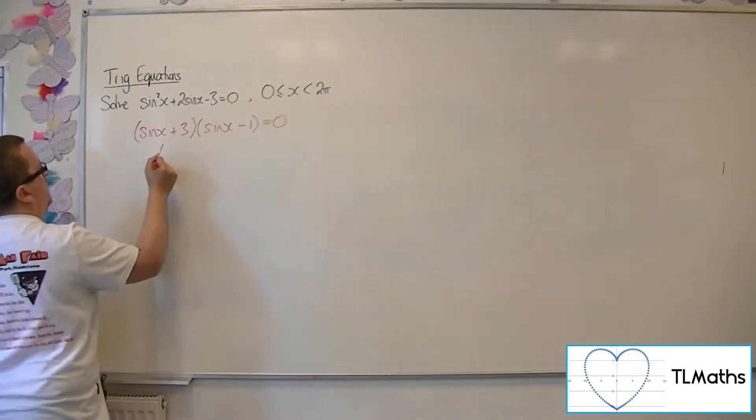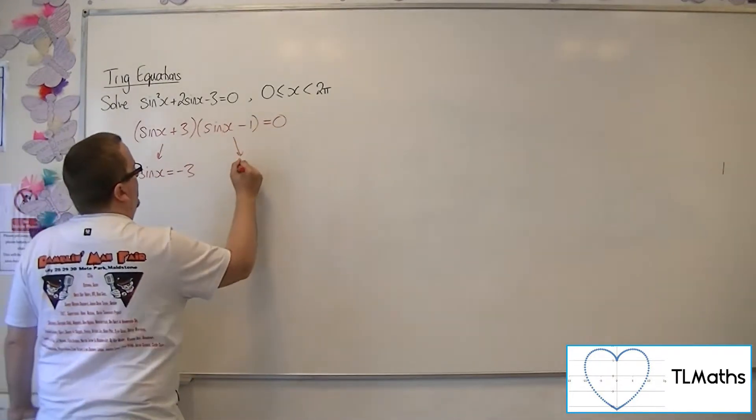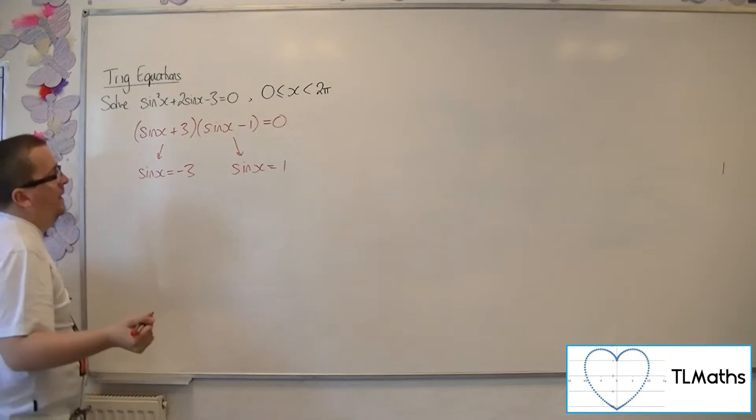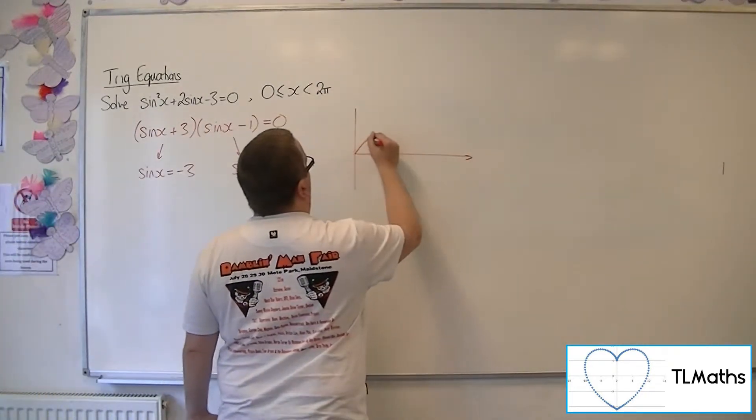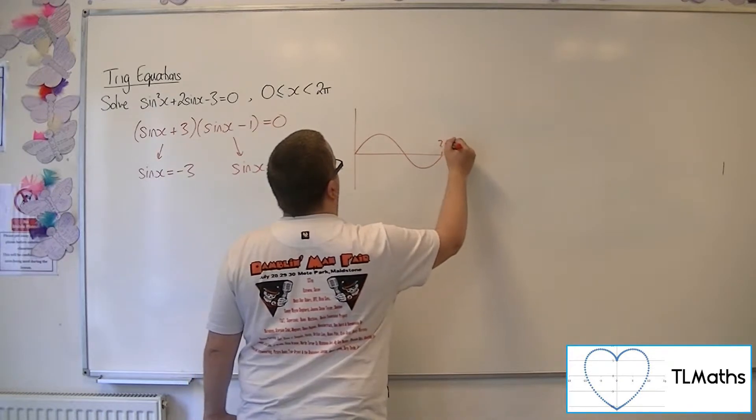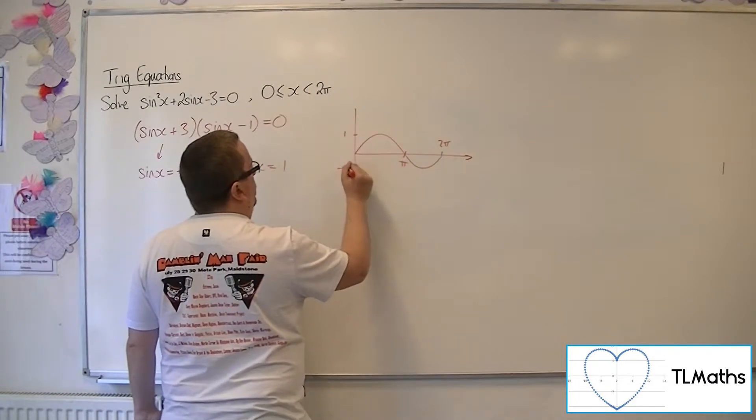From the first bracket, sinx = -3, and from the second bracket, sinx = 1. Now if you sketch sine between 0 and 2π, sine goes between 1 and -1.